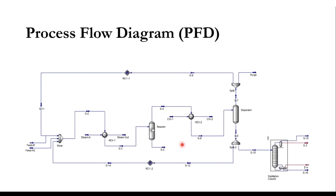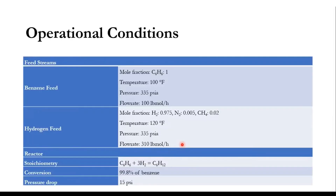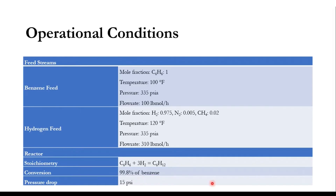The benzene feed is a pure feed at 100°F, 335 psia, and 100 lb-mol/hr. The hydrogen feed contains hydrogen, nitrogen, and methane with given temperature, pressure, and flow rate conditions. The reactor stoichiometry is a conversion reactor: benzene reacts with three moles of hydrogen to produce cyclohexane with 99.8% conversion of benzene and a pressure drop of 15 psi in the reactor.